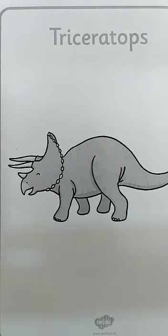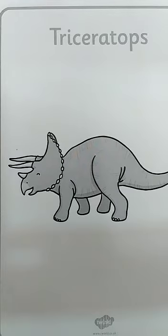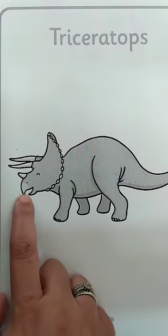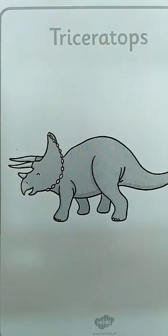Triceratops are one of the largest land animals discovered. They had 800 teeth, and it was not a very fast dinosaur — it was quite slow. It wouldn't run very fast, but it had 800 teeth in its mouth, which is a lot of teeth.